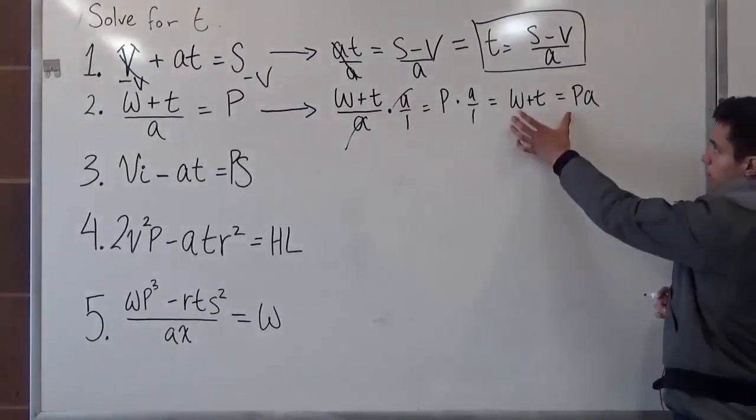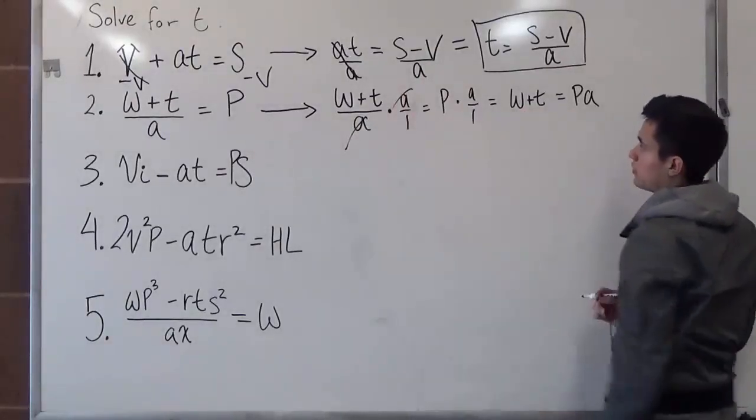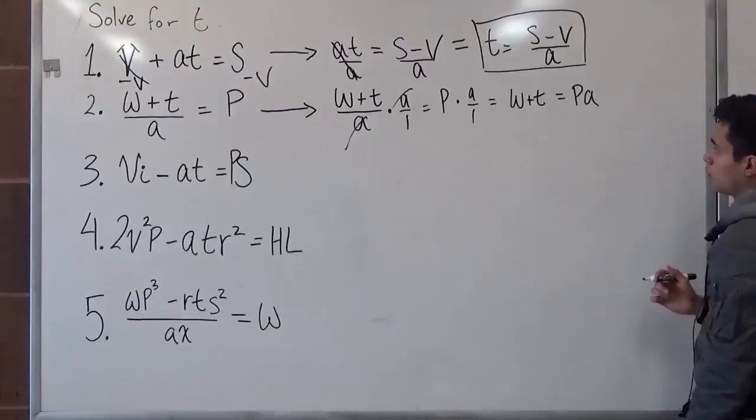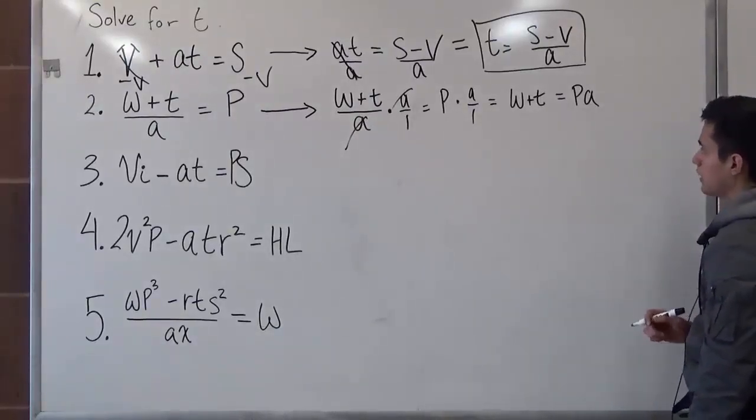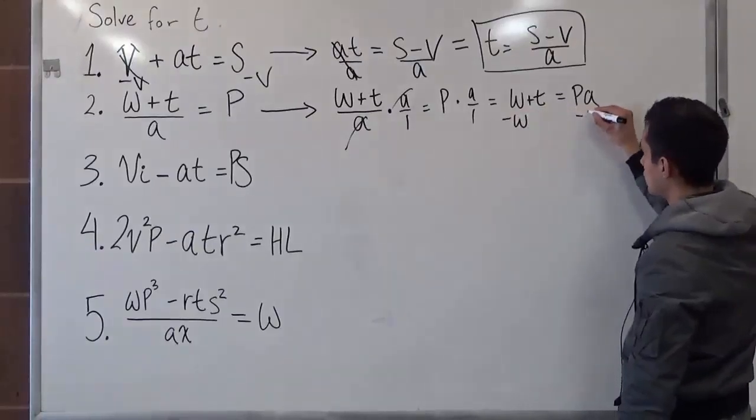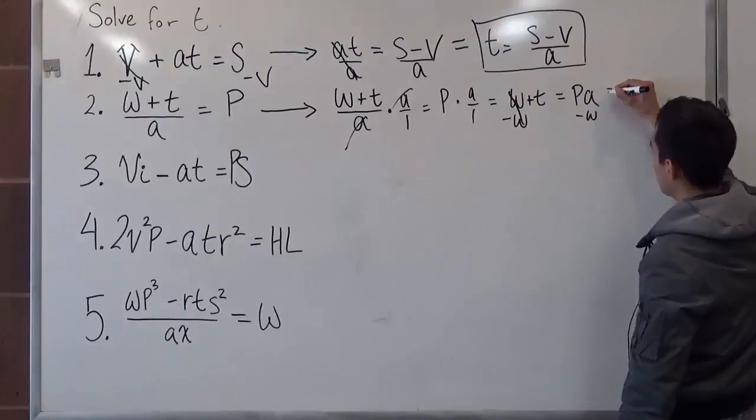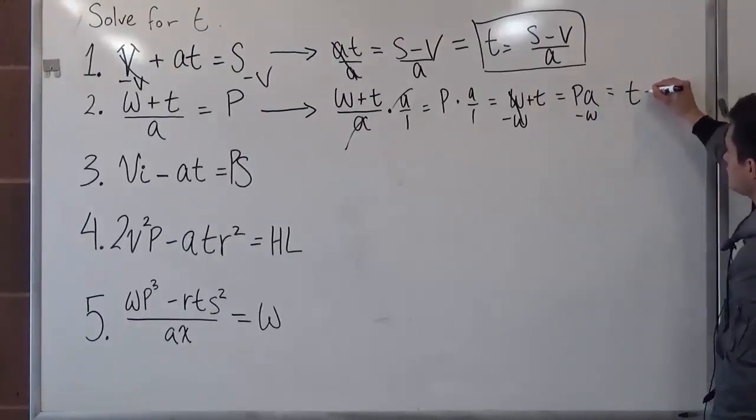So now this problem is starting to look like the problem we did originally. So now we just want to get t by itself. And this is the very simple part. You just have to subtract w from both sides. This cancels out. And we're left with t is equal to p a minus w.